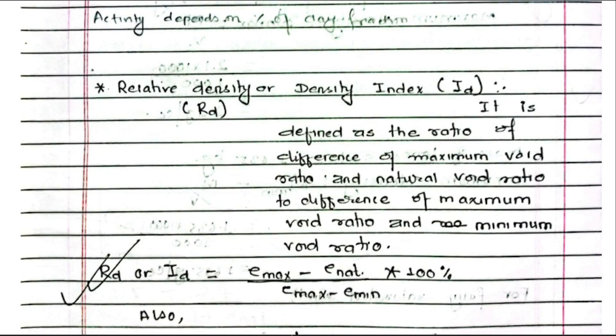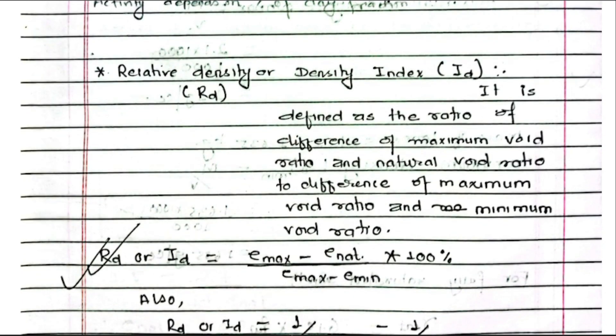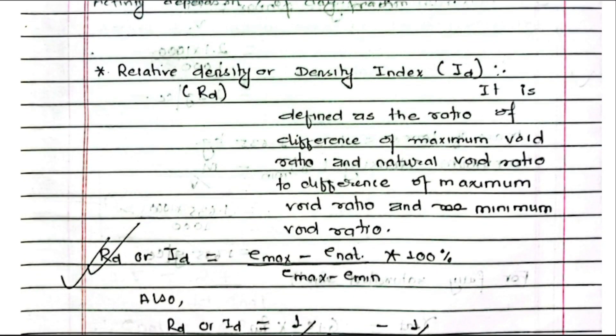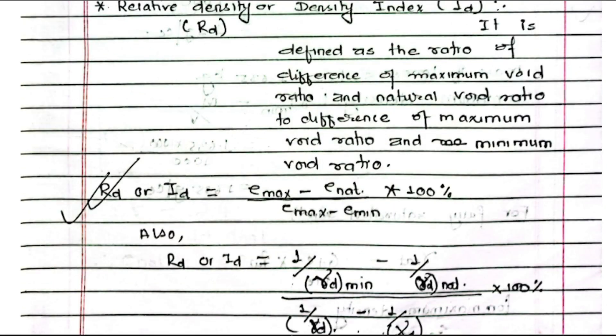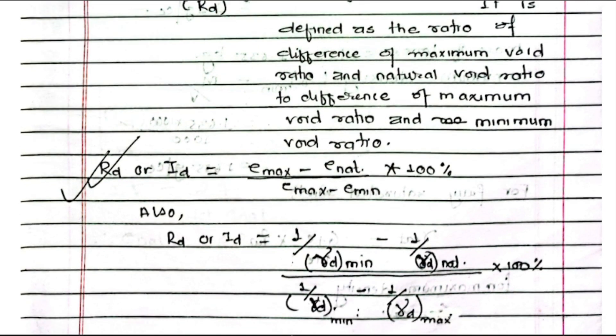Relative density: It is defined as the ratio of the difference of maximum void ratio and natural void ratio to difference of maximum void ratio and minimum void ratio. RD or ID equals e max minus e natural upon e max minus e minimum into 100 percent.